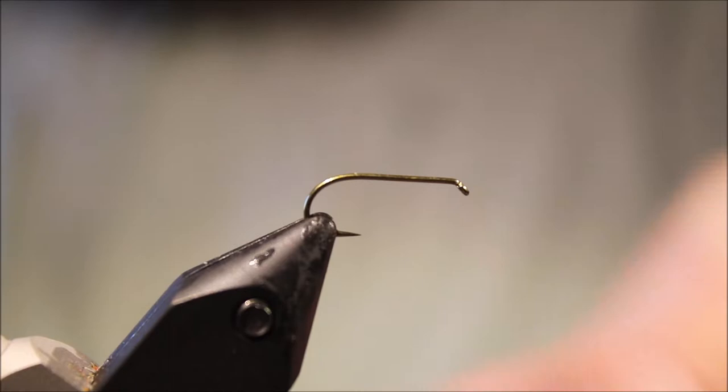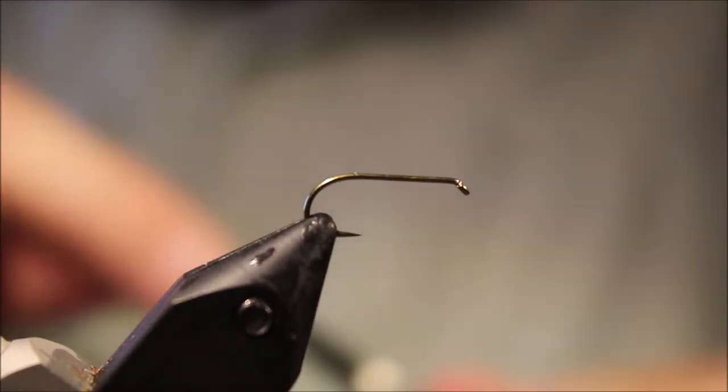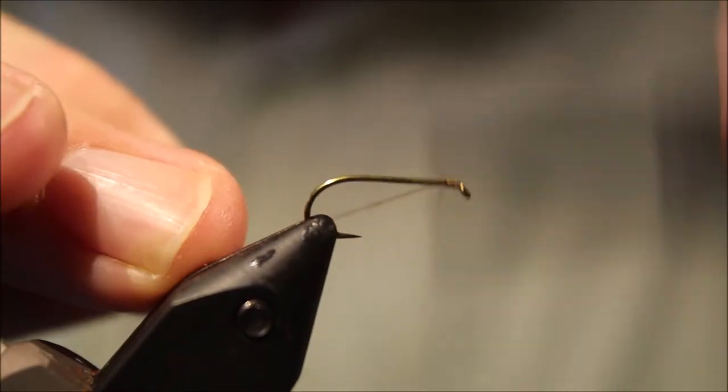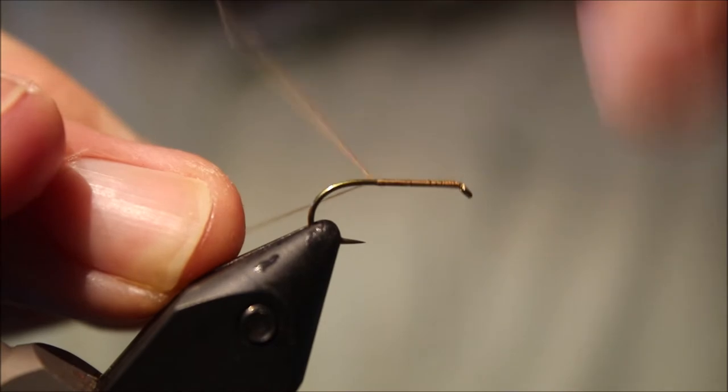So I've got the hook in the vise, it's a size 12 TMC100, just a standard dry fly. Just going to run on some 6-0 thread.